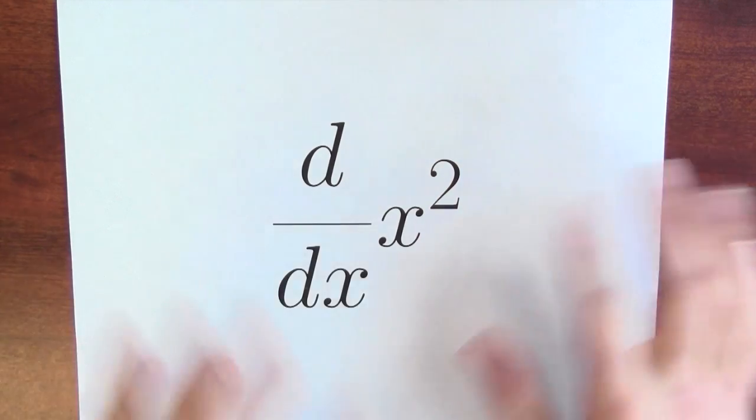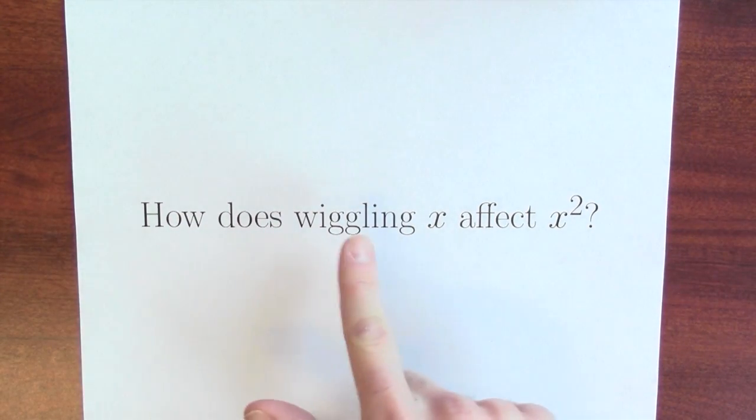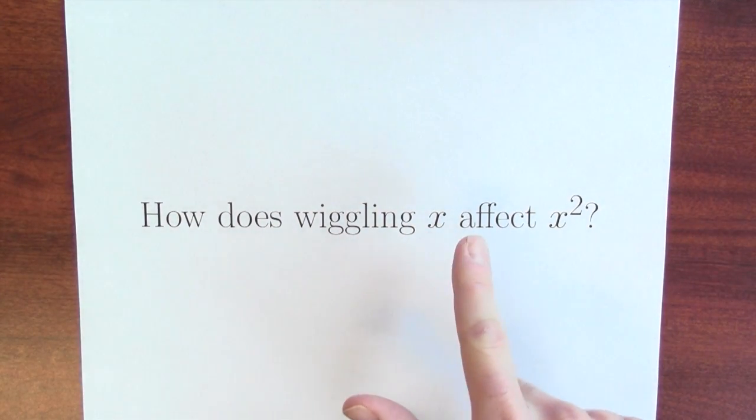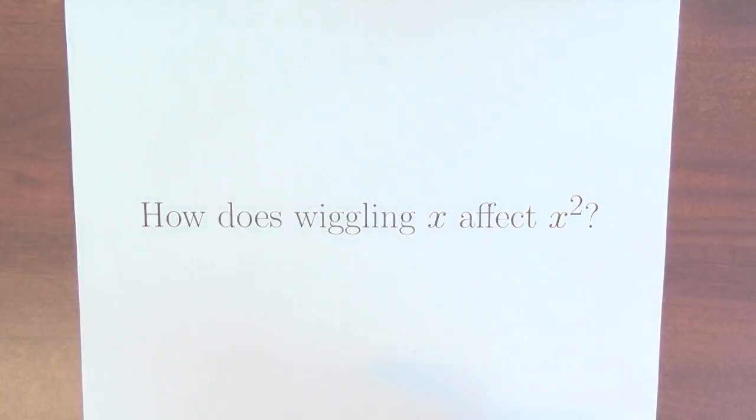We're going to calculate the derivative of x squared with respect to x. Maybe a little bit more prosaically, I want to know how does wiggling x affect x squared? There are a ton of different ways to approach this. Let's start by looking at this numerically.